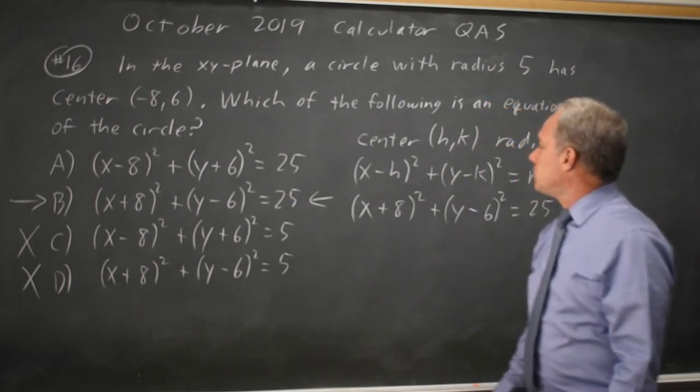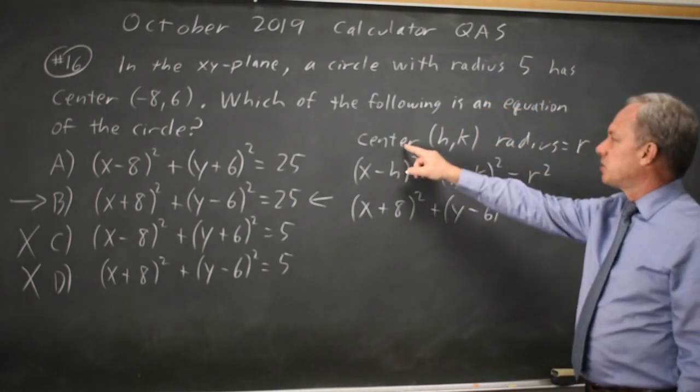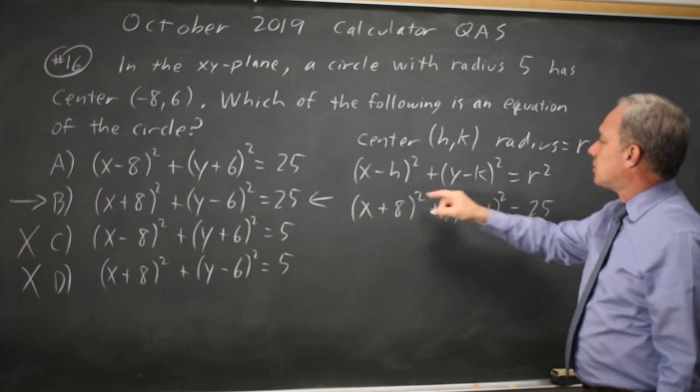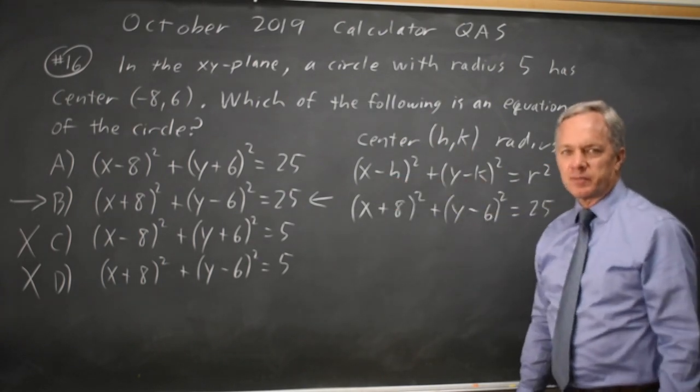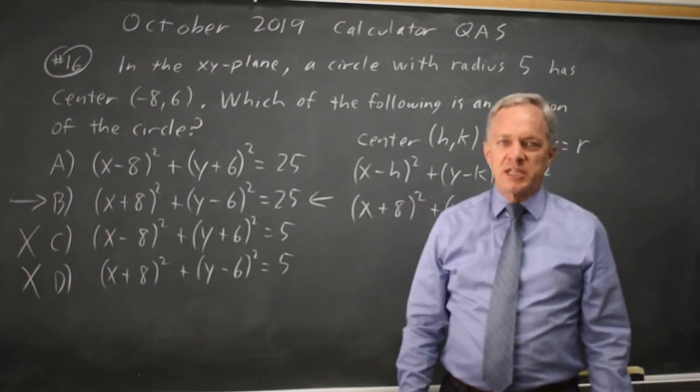So make sure you just get used to writing this simple note: center (h,k) radius r gives you (x-h)² + (y-k)² = r². And come back soon for my next video. With math, there's always more.